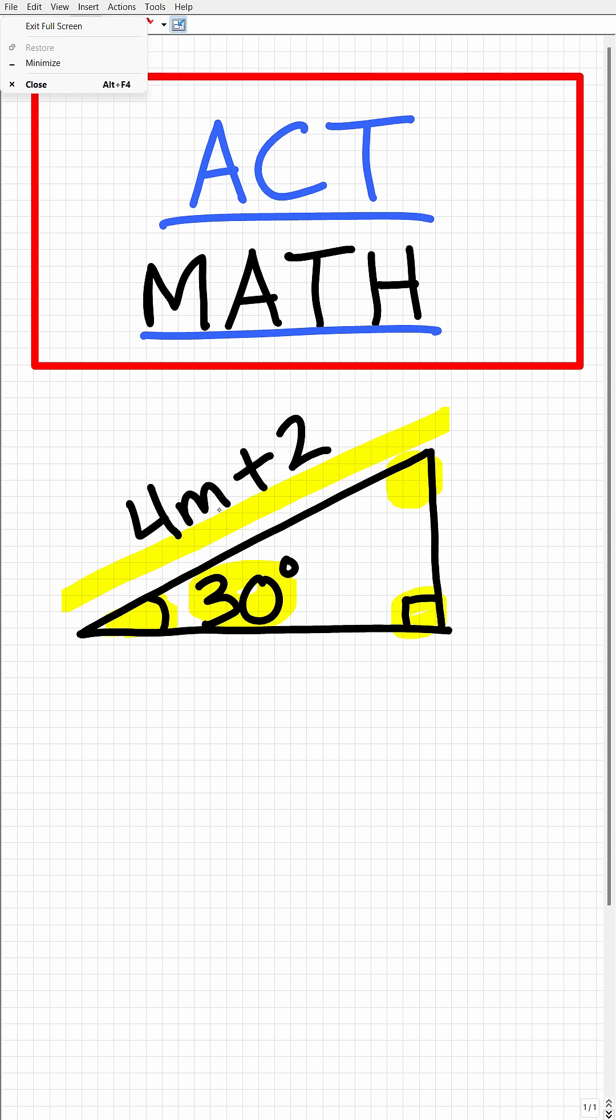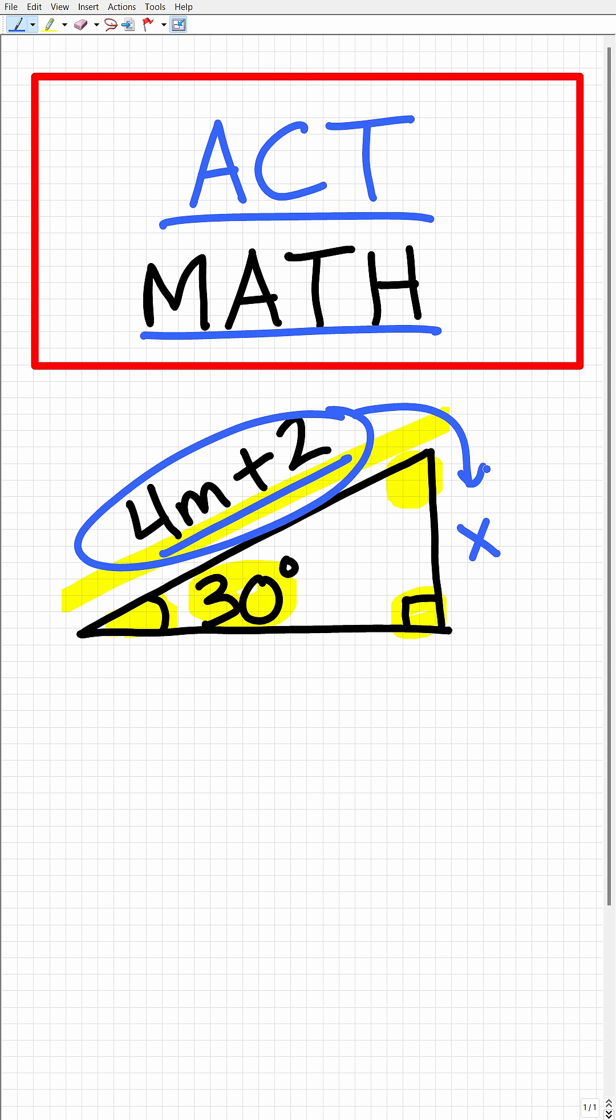Okay, so we have 4m plus 2. And to get this shorter side right here, this is going to be double this side. Okay, so if we have the hypotenuse and we want this shortest side, all we have to do is take the hypotenuse and divide it by 2.